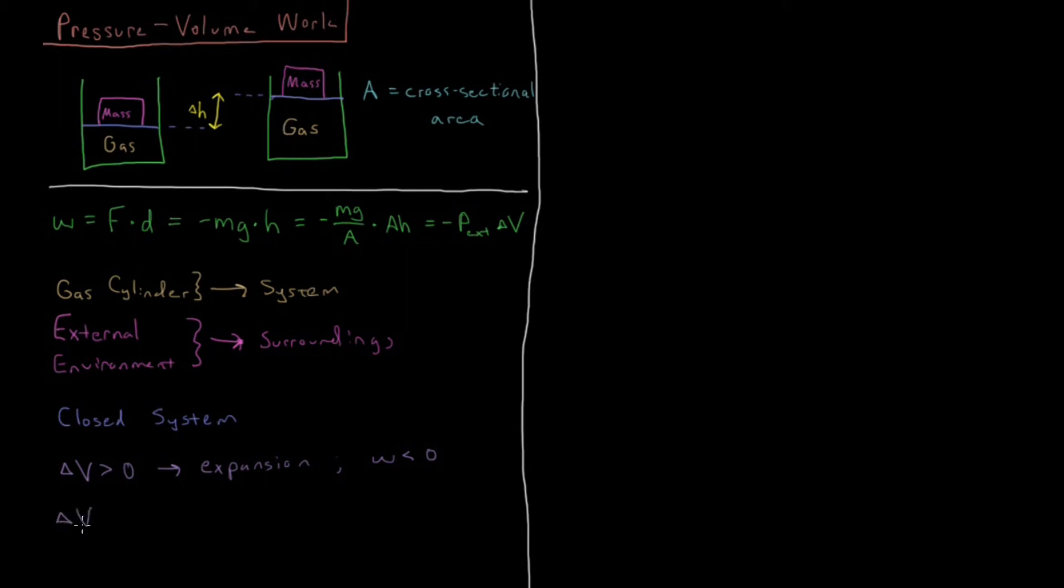Then if the change in volume is less than zero, if the volume goes down, if we start up here and finish down here, then that would be a compression of the gas. And in order to do that, then the external environment had to input energy to overcome the energy inside this gas, and force that down into a smaller volume. So work was done on the system, so that would be work which is greater than zero.